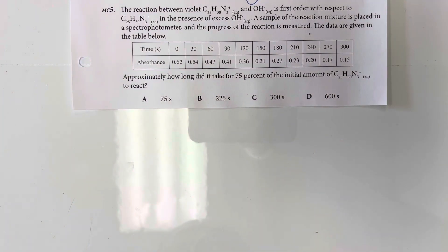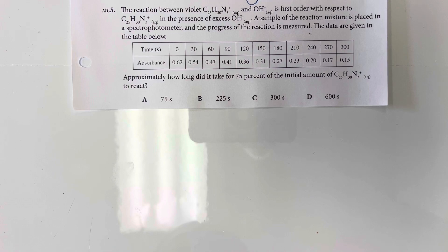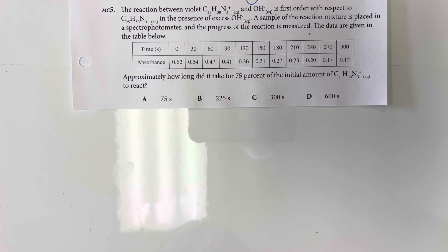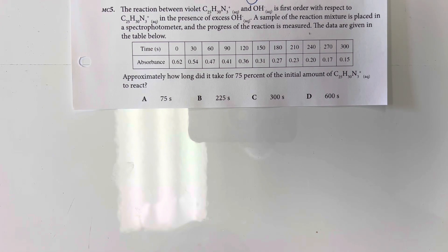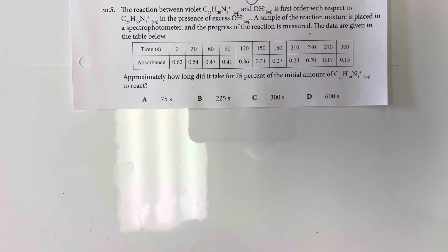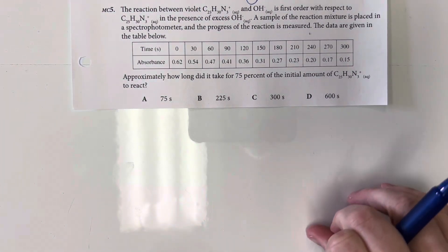The reaction between violet and hydroxide is first order with respect to the violet. In the presence of excess hydroxide, a sample of the reaction mixture is placed in a spectrophotometer and the progress of the reaction is measured. The data are given in the table below. Approximately how long did it take for 75% of the initial violet to react?